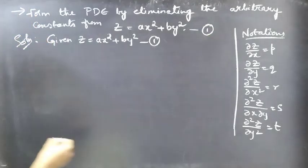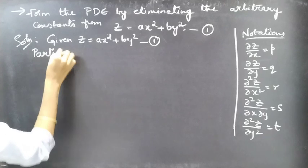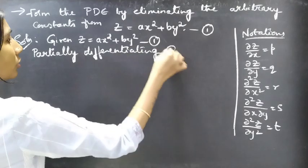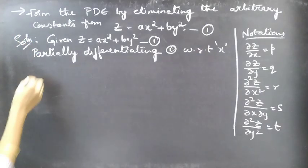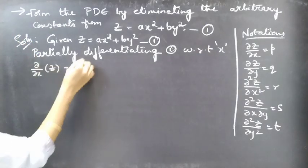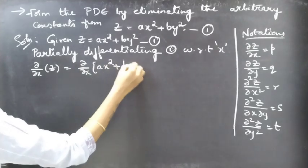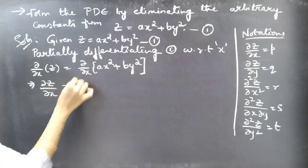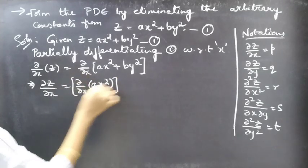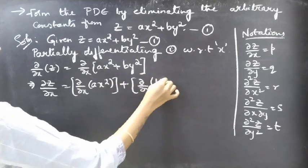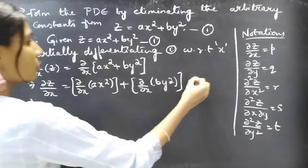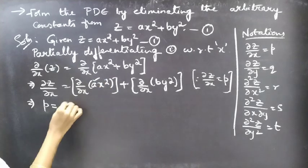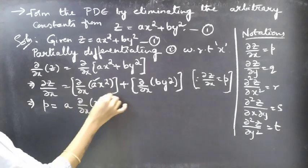Consider the given equation as equation number one. Let's partially differentiate equation one with respect to x. Applying ∂/∂x on both sides of equation one — since we are partially differentiating with respect to x, we treat y as constant. This gives us ∂z/∂x equal to ∂/∂x of the first term plus ∂/∂x of the second term. Since we have the notation ∂z/∂x = p, let's replace the left-hand side by p.